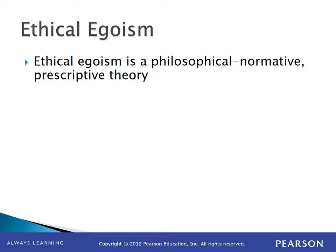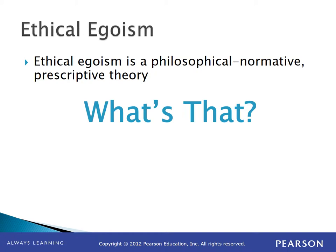We come now to ethical egoism. Ethical egoism is built on the strong theory of psychological egoism — that everyone is ultimately looking out for themselves — and says that's the way it should be. It is a philosophical, normative, prescriptive theory. The ethical egoist looks at our altruism and all the mechanisms society builds to encourage selfless behavior, and says they're not good — they're part of our problem. We should move to a society designed to accommodate the fact that everyone is ultimately going to look out for their own self-interest.